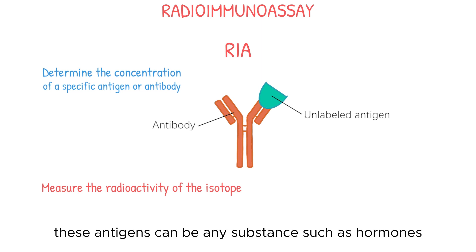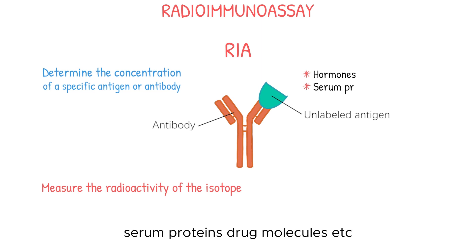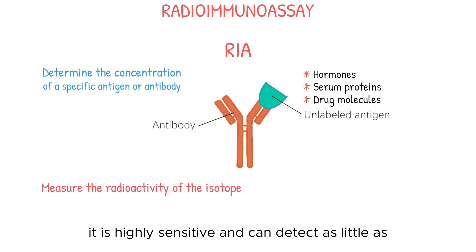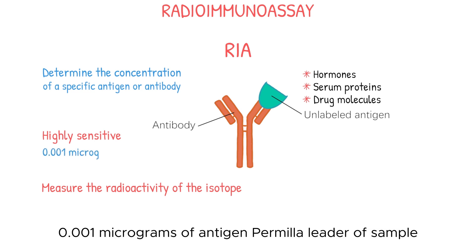These antigens can be any substance, such as hormones, serum proteins, drug molecules, etc. RIA is highly sensitive and can detect as little as 0.001 micrograms of antigen per milliliter of sample.